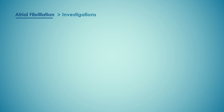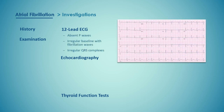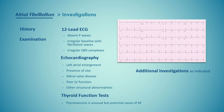Assessment of patients with newly diagnosed atrial fibrillation should include a full history, physical examination, a 12-lead electrocardiogram, echocardiogram, and thyroid function tests to exclude thyrotoxicosis. ECG shows absent P waves, an irregular baseline with fibrillation waves, and irregular QRS complexes. Echocardiographic assessment is useful to identify left atrial enlargement, presence of clot in the left atrium, mitral valve disease, poor LV function, and other structural abnormalities. Thyrotoxicosis is an unusual but potentially treatable cause of AF, and thyroid function tests should be done on every patient. Additional investigations may be needed to determine the nature and extent of any underlying heart disease.